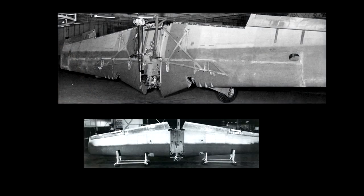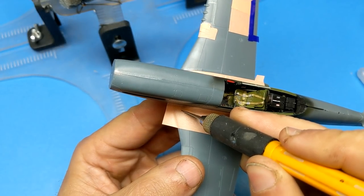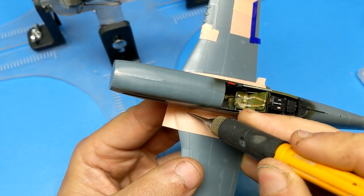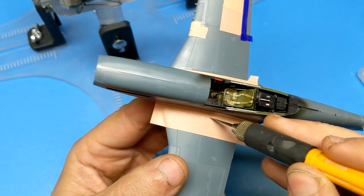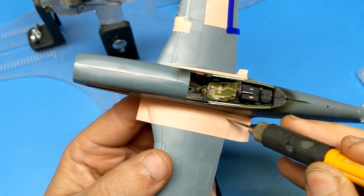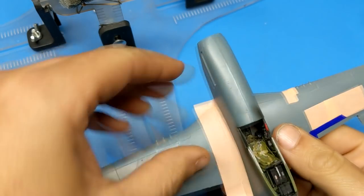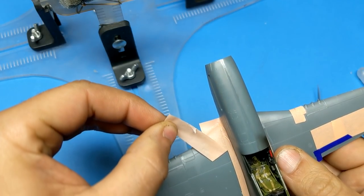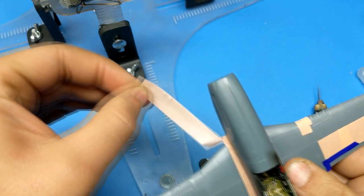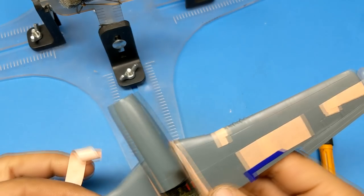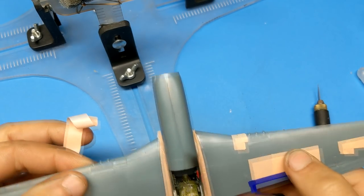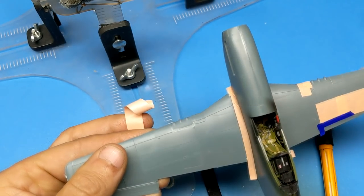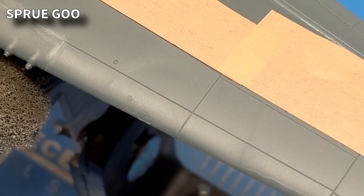I wanted this model to be even more accurate to the Mustang, so that meant filling in the panel lines. That was something that they did on the actual Mustang to make the wing more efficient. Having just done the Tempest and used sprue goo, I decided that was going to be the best way to fill in these panel lines. However, it wasn't as simple as slapping on sprue goo and then sanding it off. It actually took a few applications of the sprue goo and a few rounds of sanding, and once I thought I was done, I would come in with a primer coat of Mr. Surfacer 1000. I had to repeat this process three or four times before the model was ready for primer.